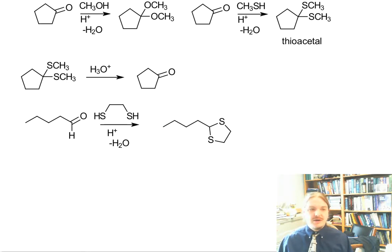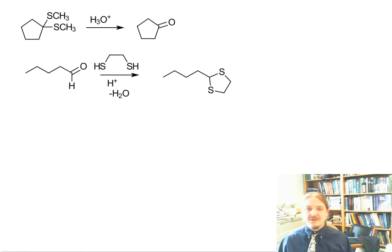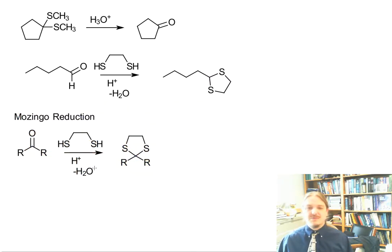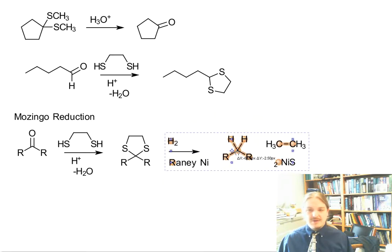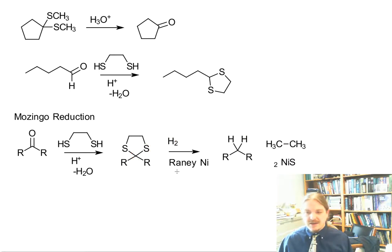Now I'm going to talk about the two things that thioacetals can do that regular acetals can't. One of them is the Mozingo reduction, which is a fun word — Mozingo reduction. The Mozingo reduction is a reduction of a thioacetal using hydrogen and Raney nickel.